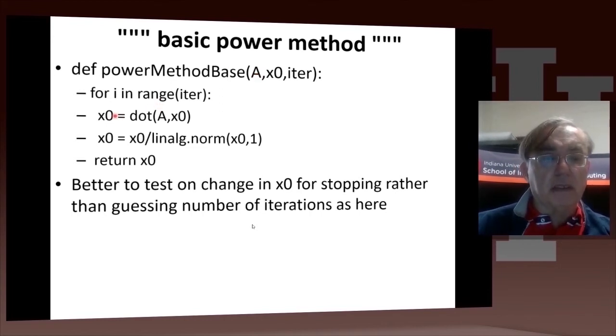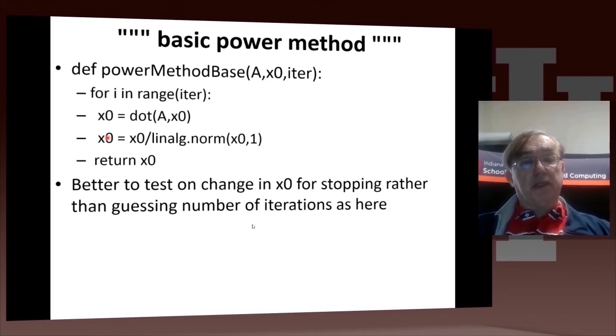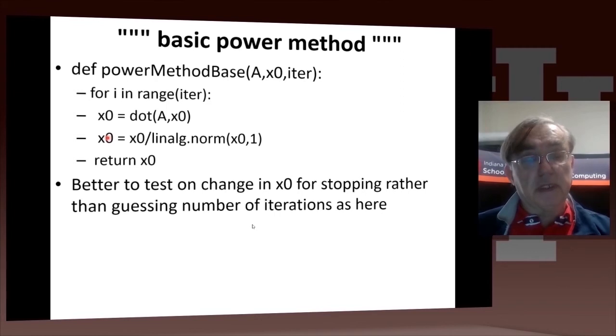You form the dot product of X0 with A, and then you replace X0 by X0 divided by its norm. And if you have the option 1 here for the norm, it says that this particular norm is such that the sum of the elements of X0 is 1. Notice that in many other applications you take a different norm, which is the sum of the squares of the components is 1. Here you have the sum of the components is 1, because we're dealing with probabilities. Probabilities add to 1. The squares of probabilities do not add up to 1.